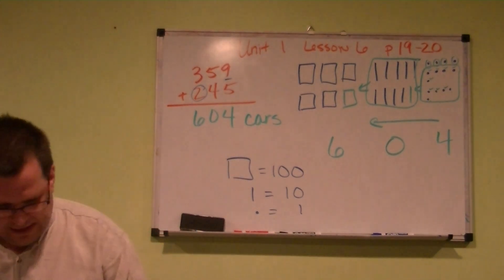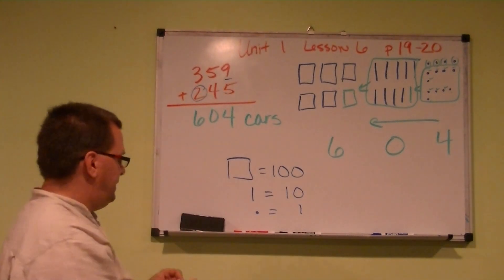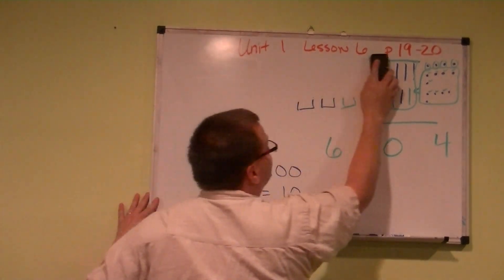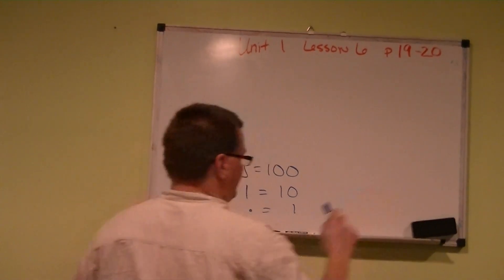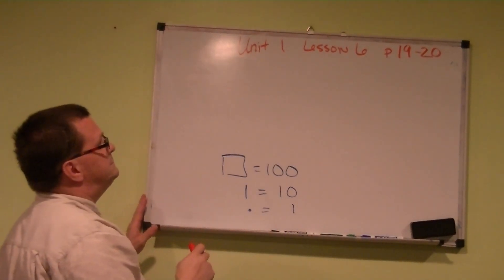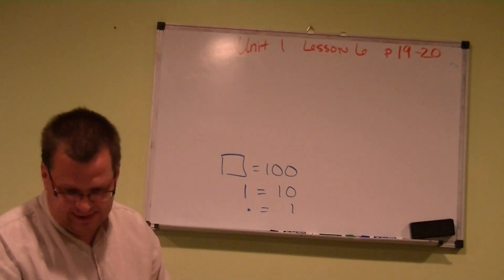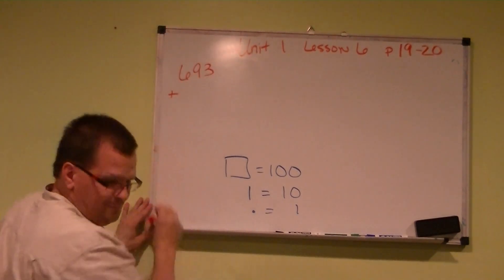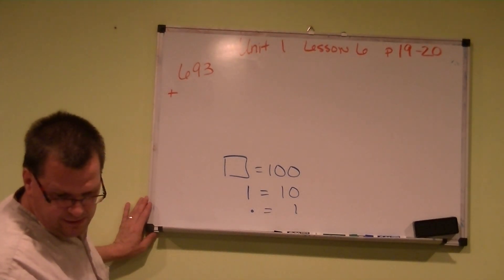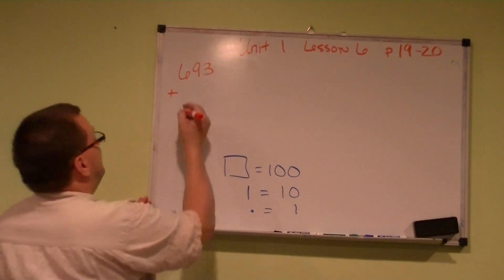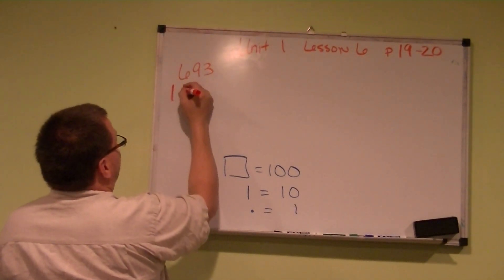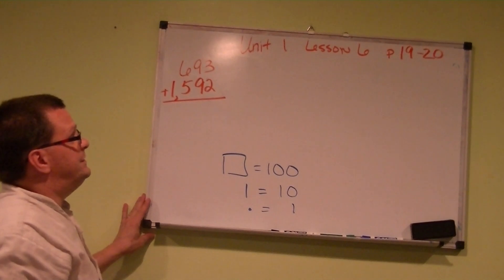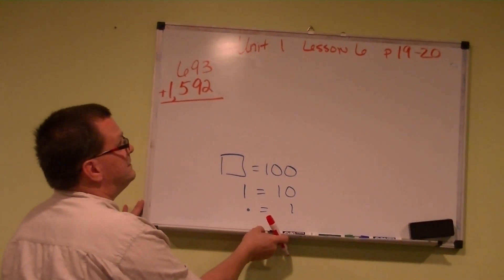Let's do the same thing for number 2 in your textbook on page 19. We'll keep the key down there. The Creepy Crawler exhibit at the Science Museum has 693 spiders, that's 693, and 1,592 centipedes. Don't forget we have to use our proof drawing to answer that problem.